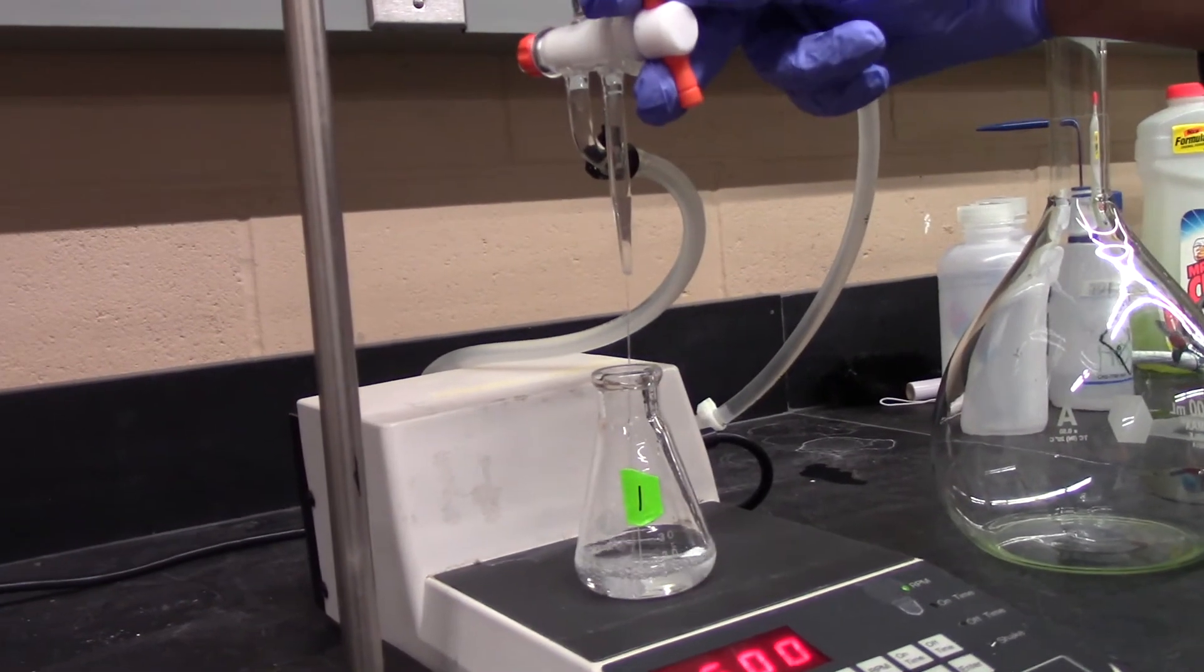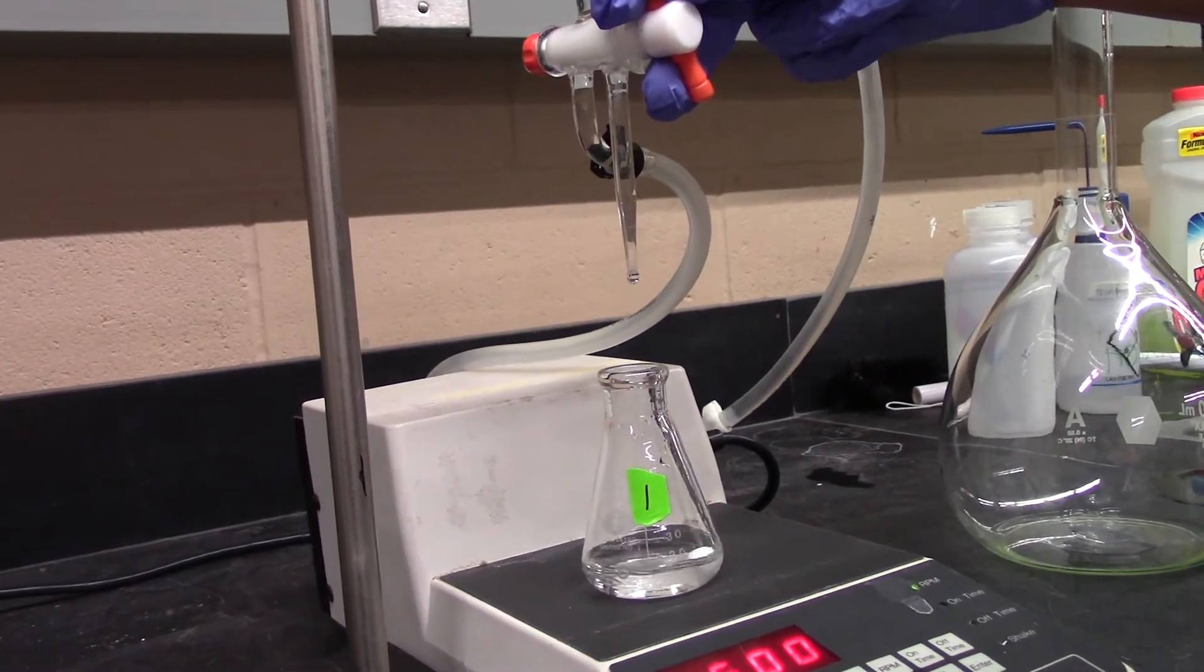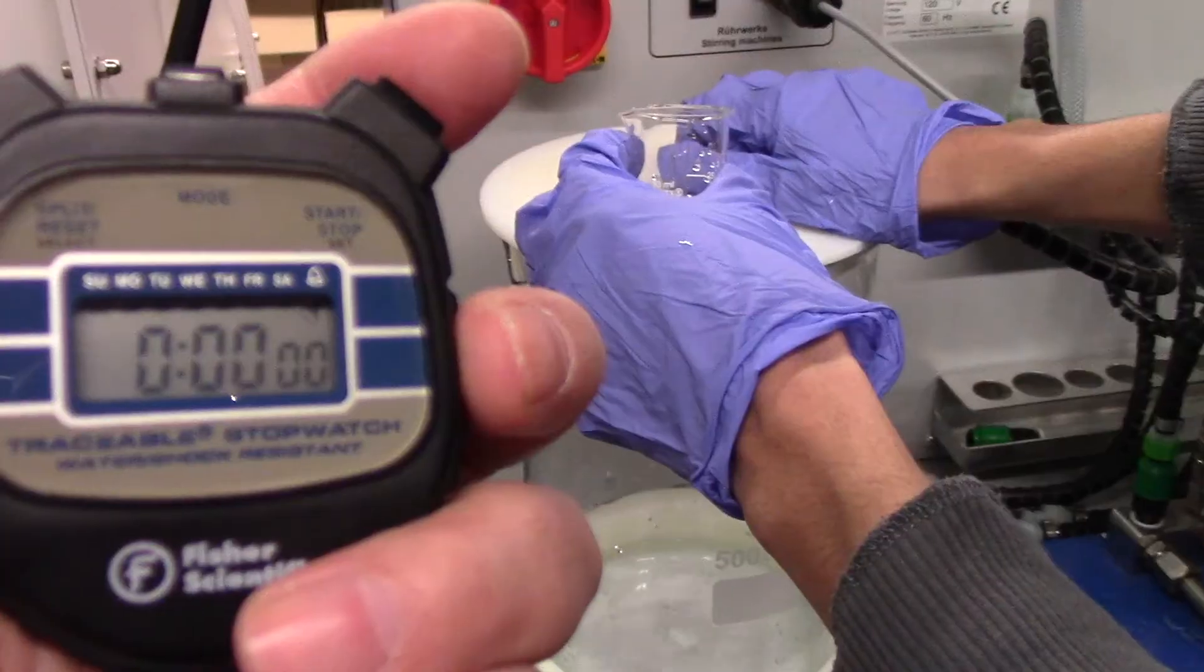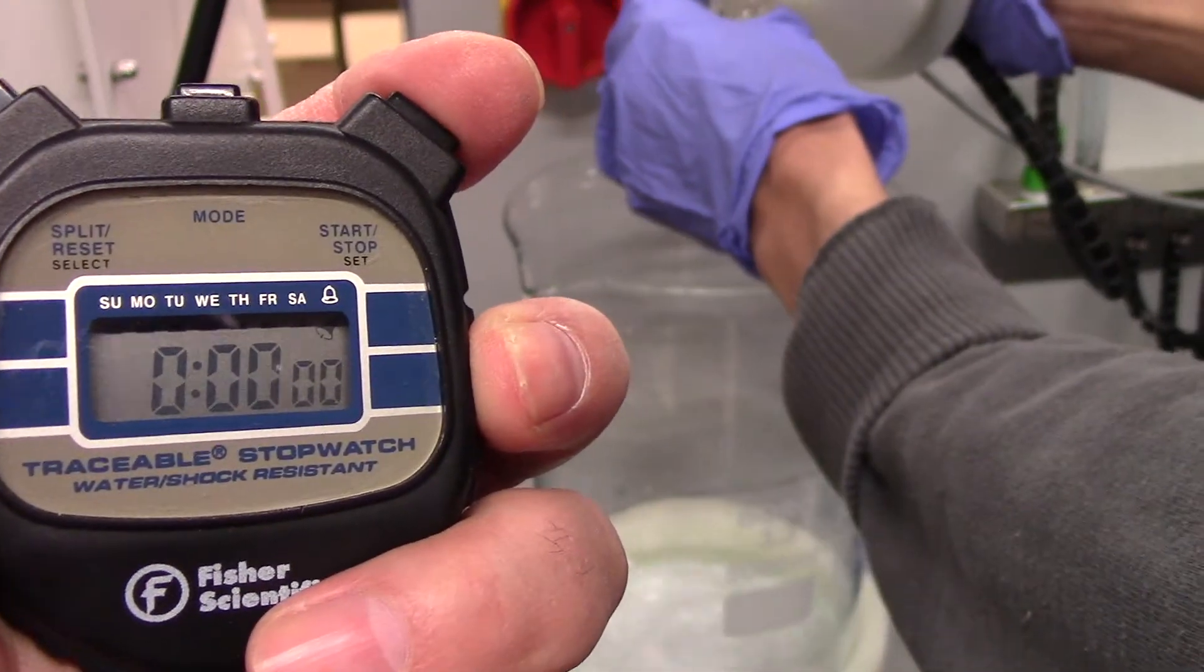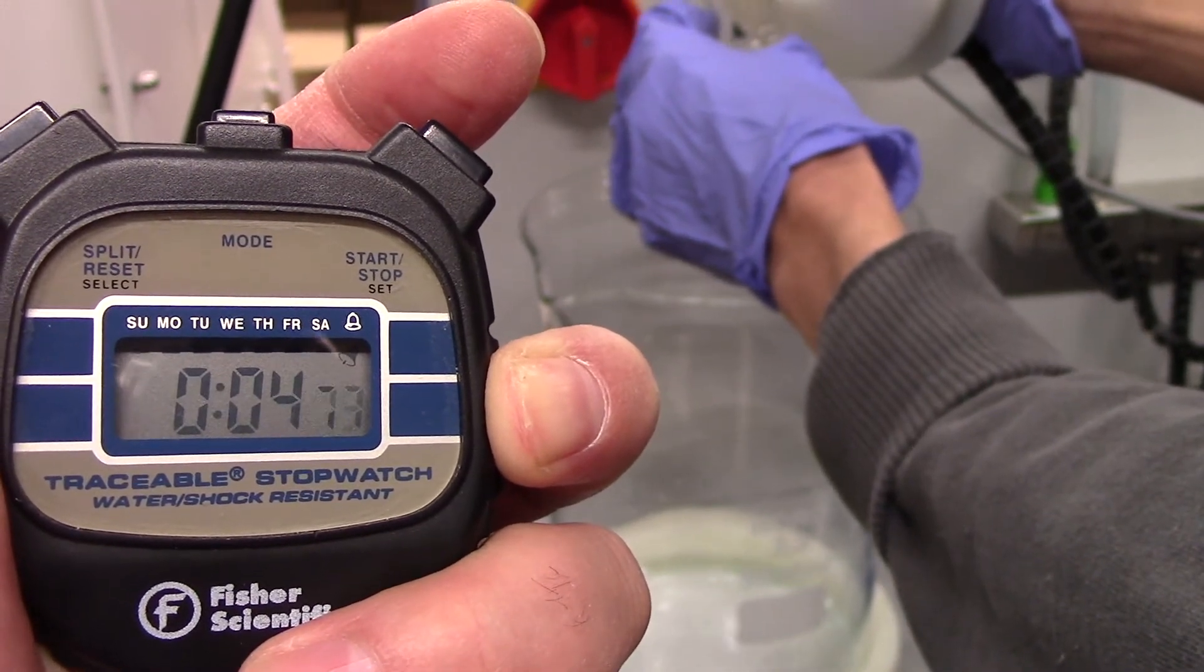The quenching process should follow the same steps used to standardize our solutions in the beginning, titrating until a distinct color change is observed. The product dripping out should also be collected in a beaker over a 60 second period to manually determine the output flow rate.